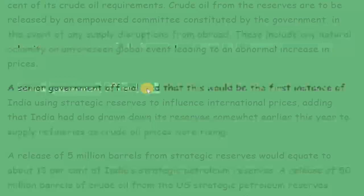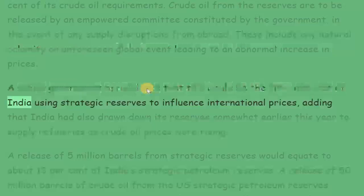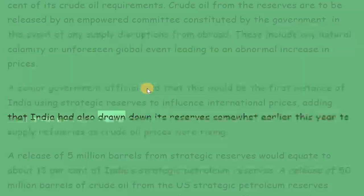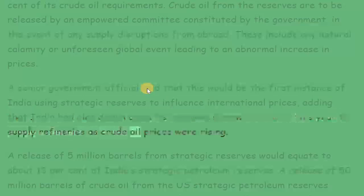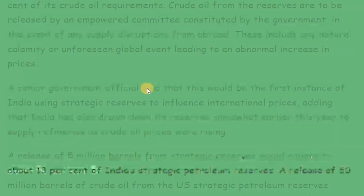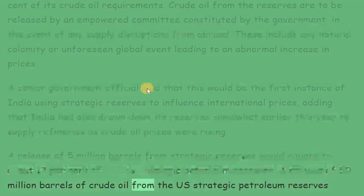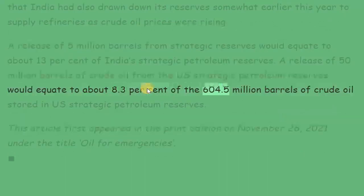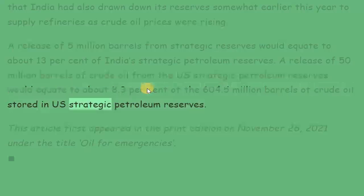A senior government official said that this would be the first instance of India using strategic reserves to influence international prices, adding that India had also drawn down its reserves somewhat earlier this year to supply refineries as crude oil prices were rising. A release of 5 million barrels from strategic reserves would equate to about 13% of India's strategic petroleum reserves. A release of 50 million barrels from the US strategic petroleum reserves would equate to about 8.3% of the 604.5 million barrels stored in US strategic petroleum reserves.